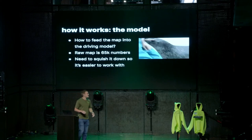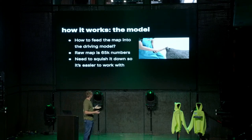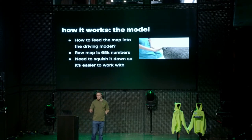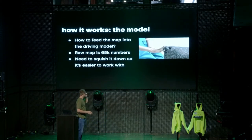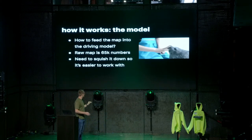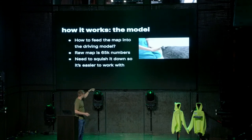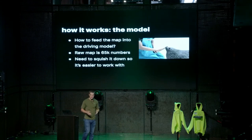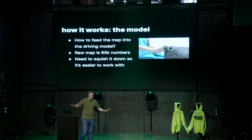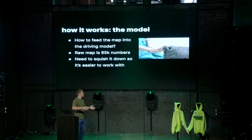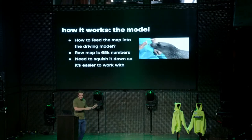Now that we have our maps, we just need to feed them into the driving model somehow. The problem is the raw maps are 256 by 256 pixels — that's about 65,000 numbers. That's way too big, so we can't feed these directly into the model. We're going to have to squish them down somehow to make them easier to work with.